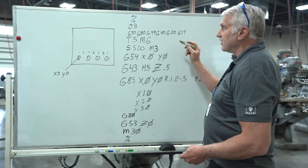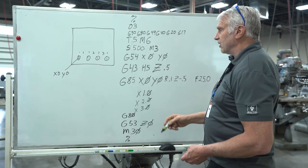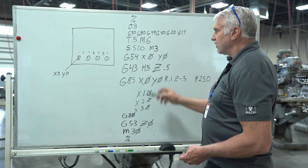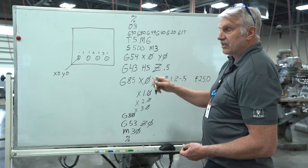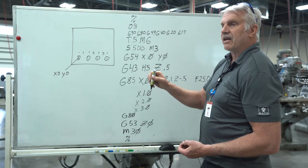The things that we've changed on this is basically the tool number, the height offset number, the spindle speed, and a feed rate, but the only difference is it feeds down and feeds back up.